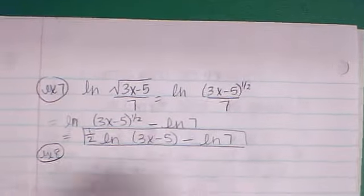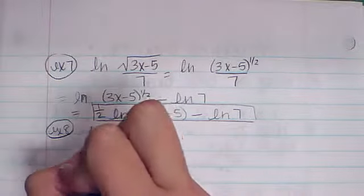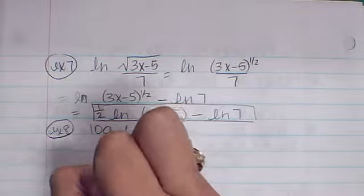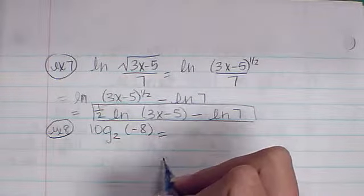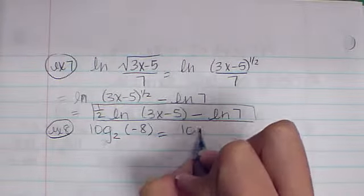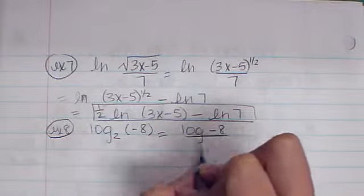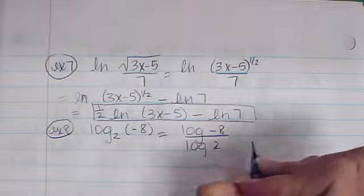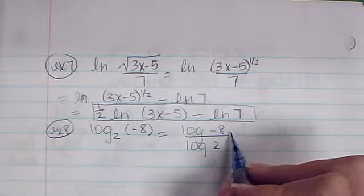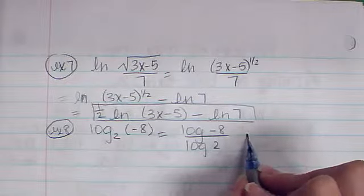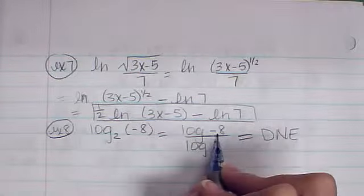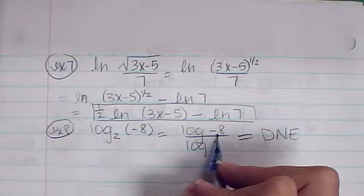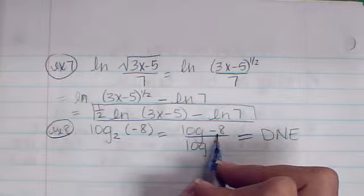Let's do one more. The log base 2 of negative 8. If I use my change of base formula, I would do the log of negative 8 over the log of 2, and you're going to get undefined. The reason I wanted to show you this one more time, that it does not exist, is to remind you that you can't take a negative log or a negative natural log.